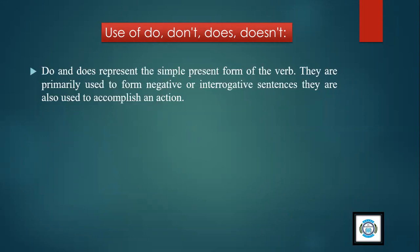So is this clear? Basically when you have to form the negative or interrogative sentences, you use do, don't or does, doesn't. And sometimes when you want to show that you have accomplished or completed an action, we use do or don't.